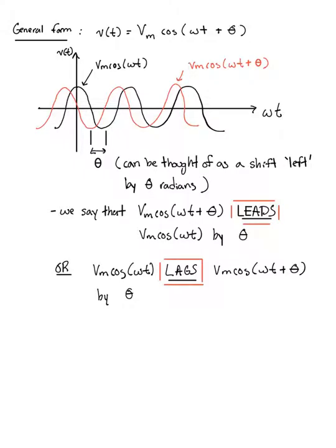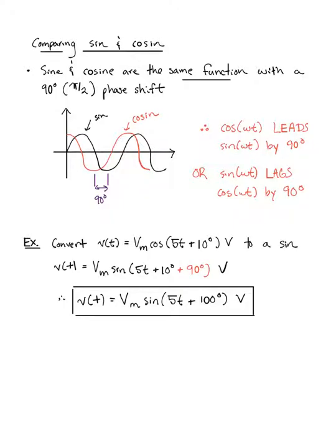Let's explore that further. When comparing sine and cosine, they're the same function, just with 90 degree phase shift. If we plot cosine in red and sine in black, we can relate them using leading and lagging. Cosine leads sine by 90 degrees, or sine lags cosine by 90 degrees.